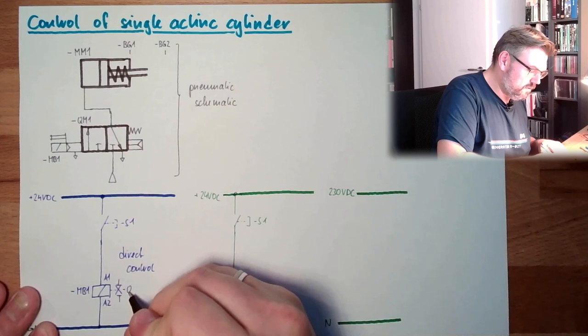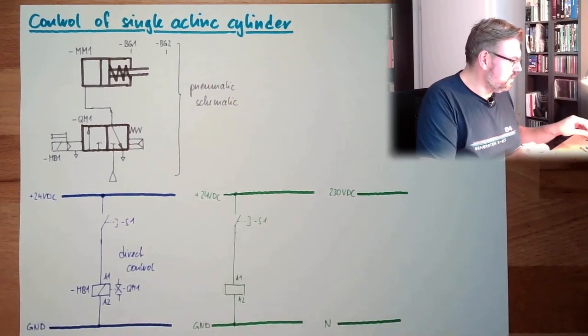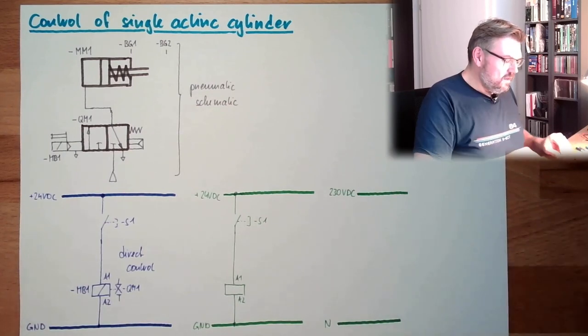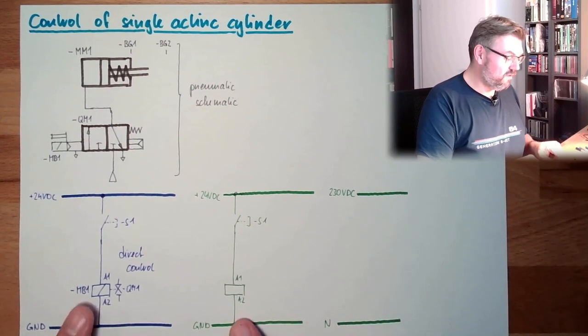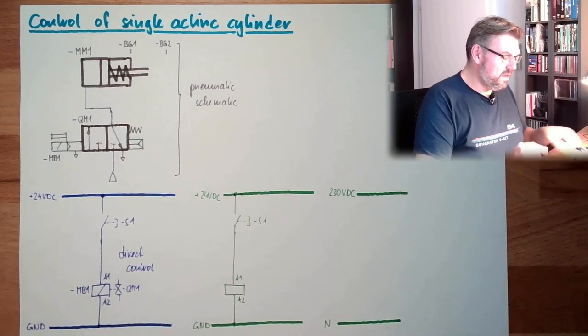There might be drawn this valve here. There might even be written which valve, then it's totally clear where it belongs to. This would be nice. So we are not switching the valve directly now. Like here, we are switching a relay.